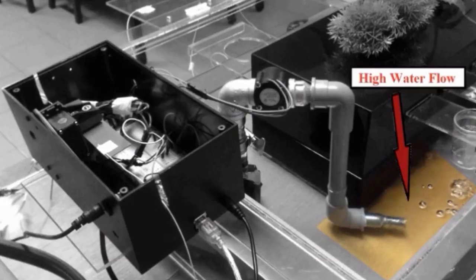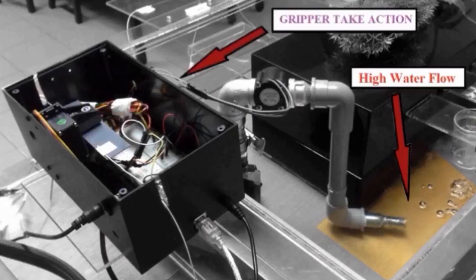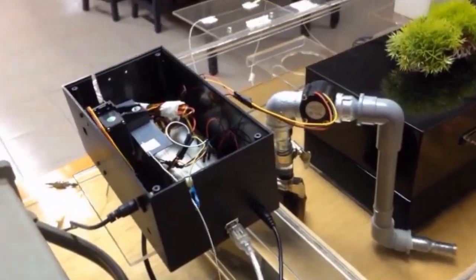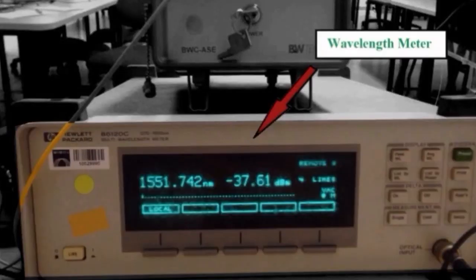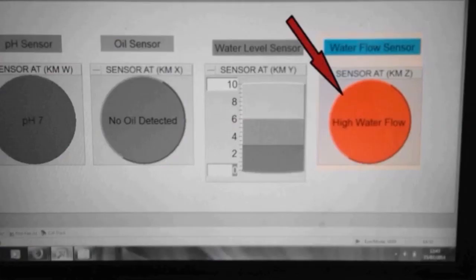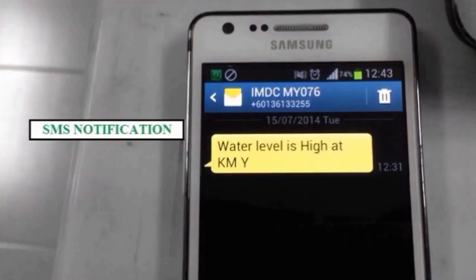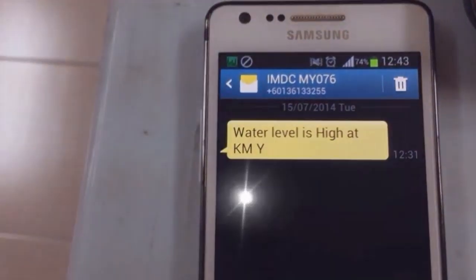If there is a stream of high water flow, then the gripper will respond and change the wavelength of the FBG. The wavelength meter will be changed due to the gripper pressure. The water flow sensor will display a red alert on the graphical user interface to indicate if the system detects high water flow. Then the system will send an SMS notification to the person in charge.